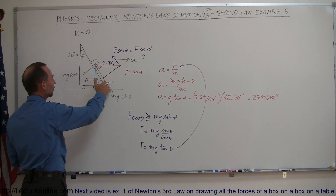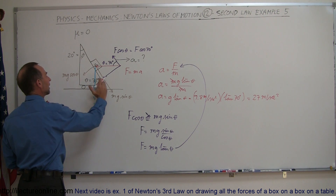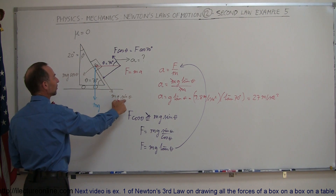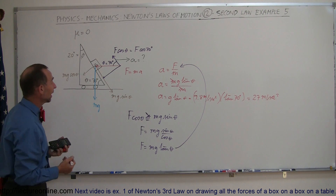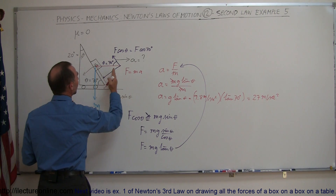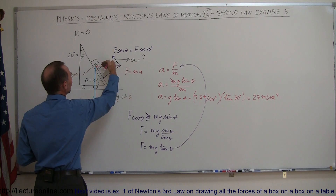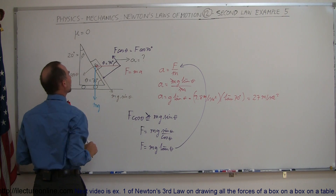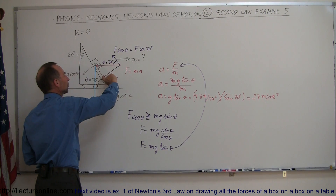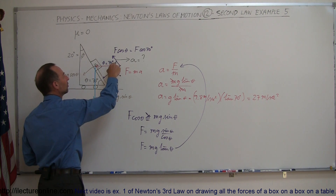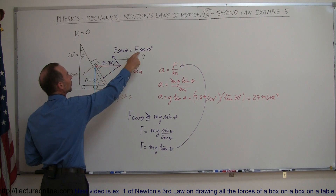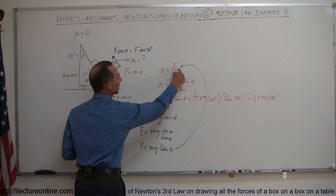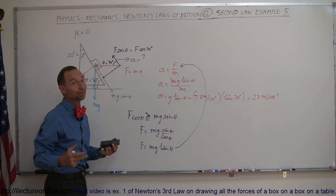To summarize: normally the force pulling the block down the incline is gravity's component parallel to the incline — weight times sin(θ). We need some force to cancel that. When the block is pushed to the right, it feels a fictitious force to the left, which has perpendicular and parallel components to the incline. When the parallel component equals mg·sin(θ), the block stops sliding. Since that parallel component is F·cos(70°), we set it equal to mg·sin(θ), solve for F, plug it in, and get the acceleration. That's how you do that problem.